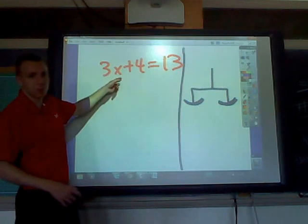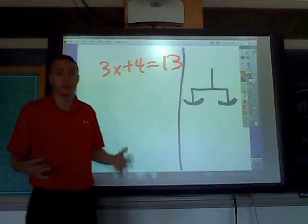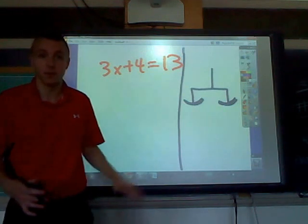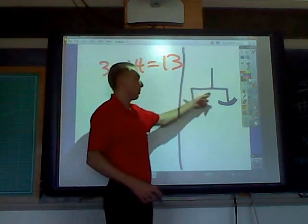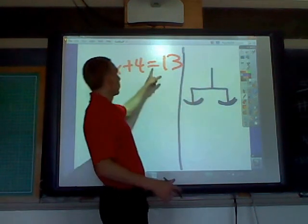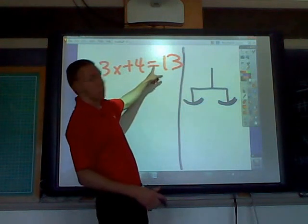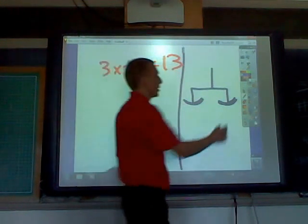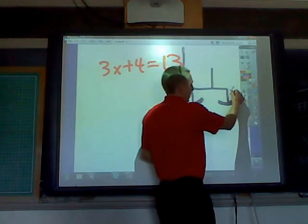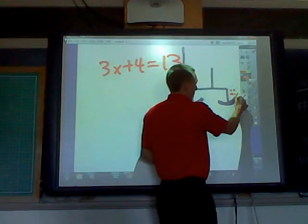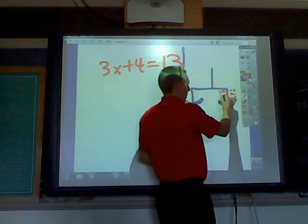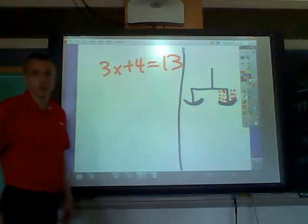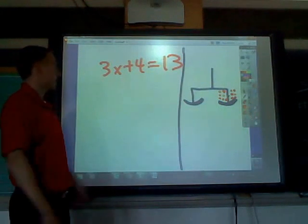So we have 3x plus 14 equals 13 — this one we're going to solve. I want you to think of this like a balance scale. On one side of the equation we have 13, so I'll make 13 dots — you could think of them in a sense of weight. There's 6, and there's the 13th one, so we have 13 total dots there.